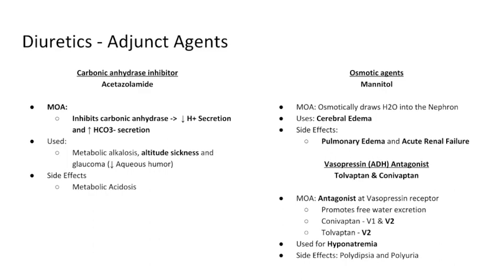Acetazolamide is also used in altitude sickness, as discussed previously. And it's used in glaucoma because it decreases aqueous humor production. Obviously, by inhibiting hydrogen ion secretion and increasing bicarb secretion, it can cause metabolic acidosis as a side effect.